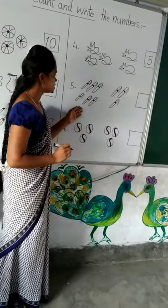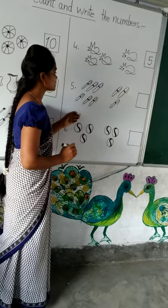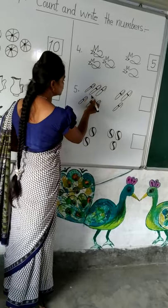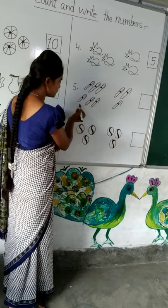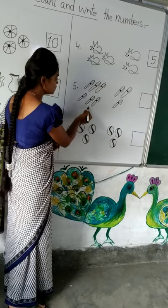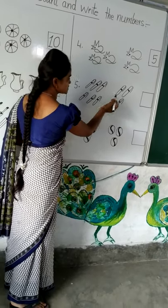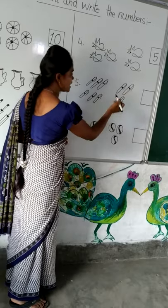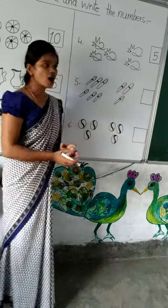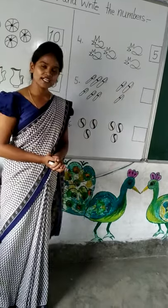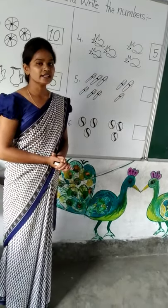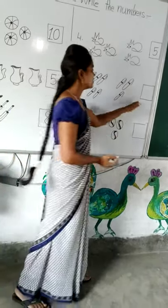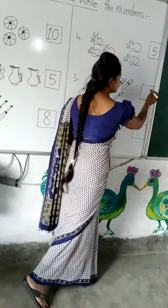Come to this picture. We will count. 1, 2, 3, 4, 5, 6, 7, 8, 9. How many pens are there? There are 9 pens. We will write 9 in the box.